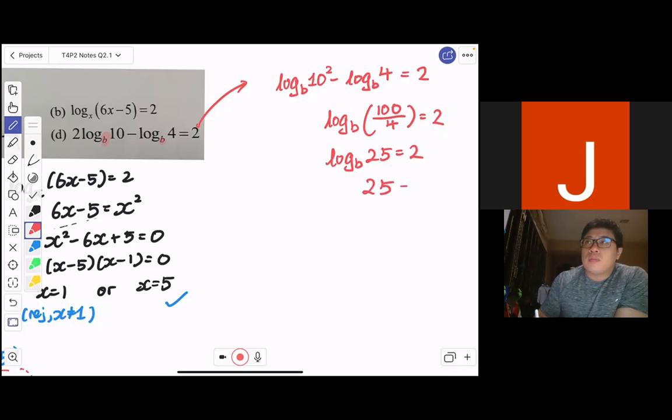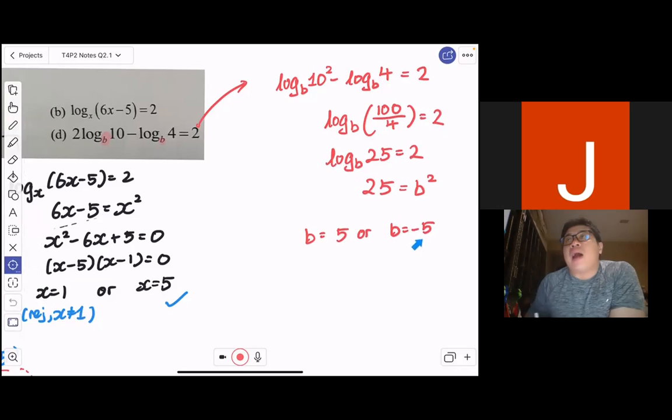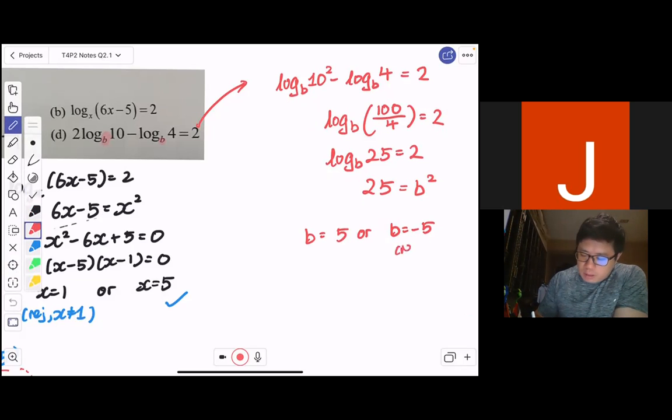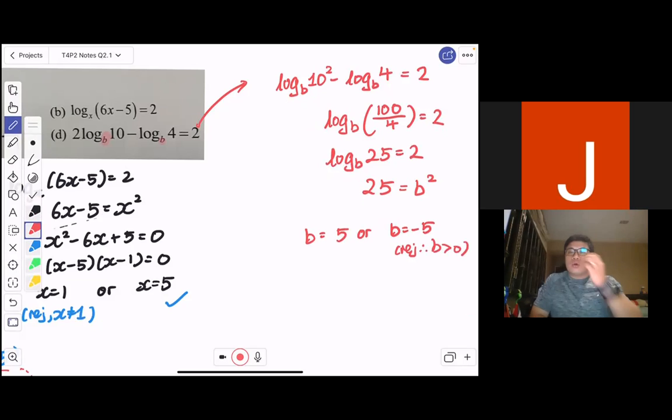Changing this to the index form, I have 25 = b², your b is basically equals to positive 5 or negative 5. Again, negative 5 will violate the fact that b is a base, and therefore, it has to be positive. So we reject because b has to be positive. So habitually, you should review your solutions all the time, wherever you do logs, wherever you do surds, wherever you do indices, you should always review your solution, such that you are not in the case where you have more than one needed. Thank you.